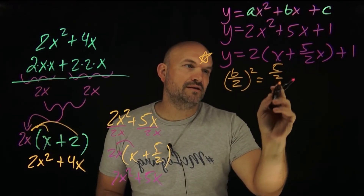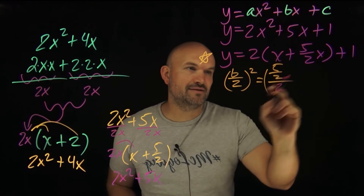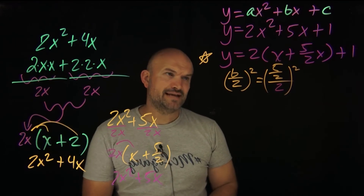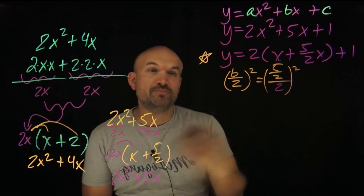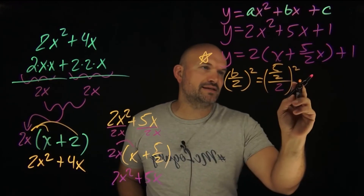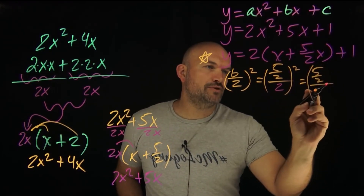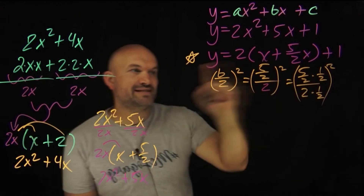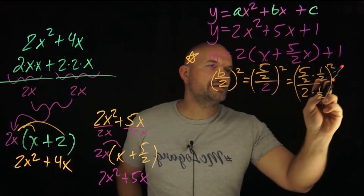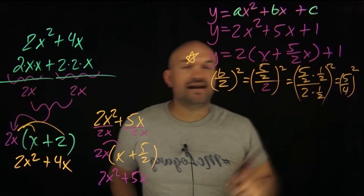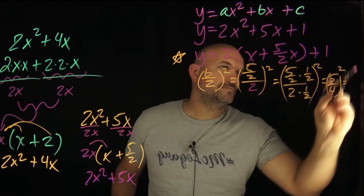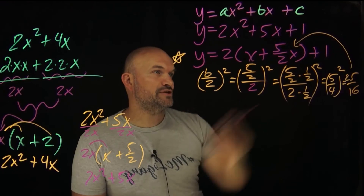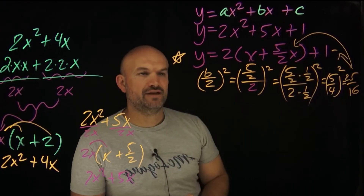In this case, b is 5/2. So we compute (5/2) ÷ 2 and then square it. Remember dividing by 2 is the same as multiplying by 1/2. So (5/2) times (1/2) gives us 5/4. Then (5/4) squared is 25/16. That is the number we add inside the parentheses to create a perfect square trinomial — but remember to also subtract that value to keep the expression balanced.